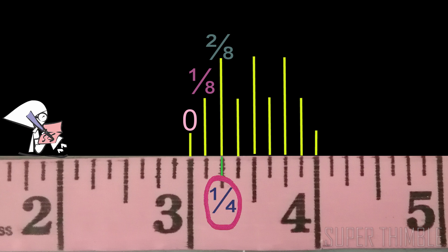The next line is 3/8 inch, and then 4/8 inch. Now this 4/8 inch can get divided further and it becomes half an inch.